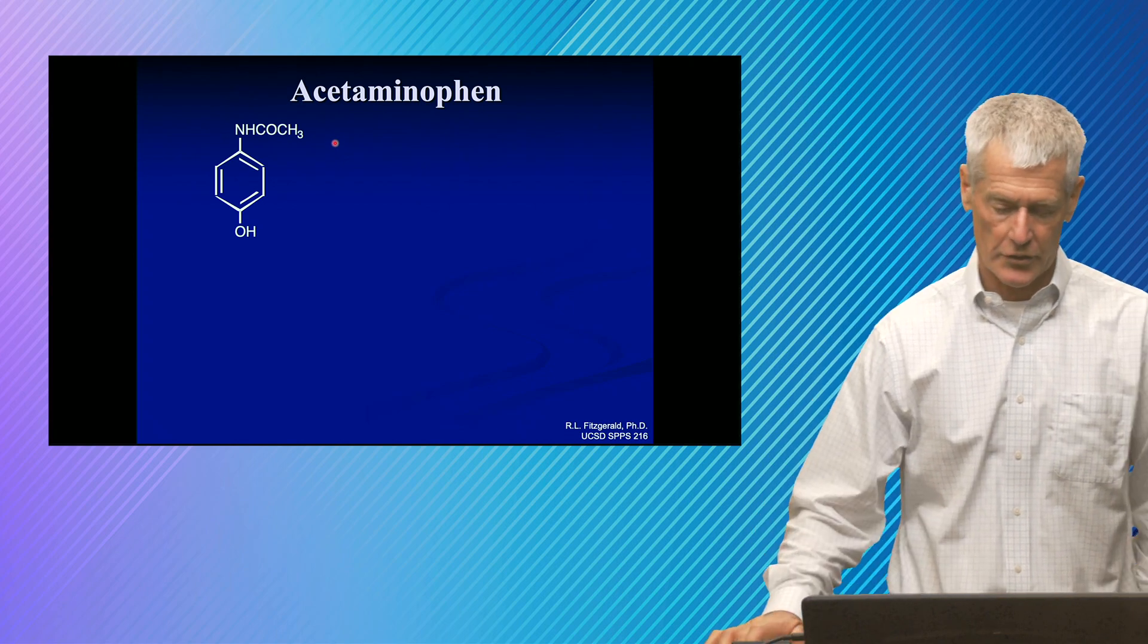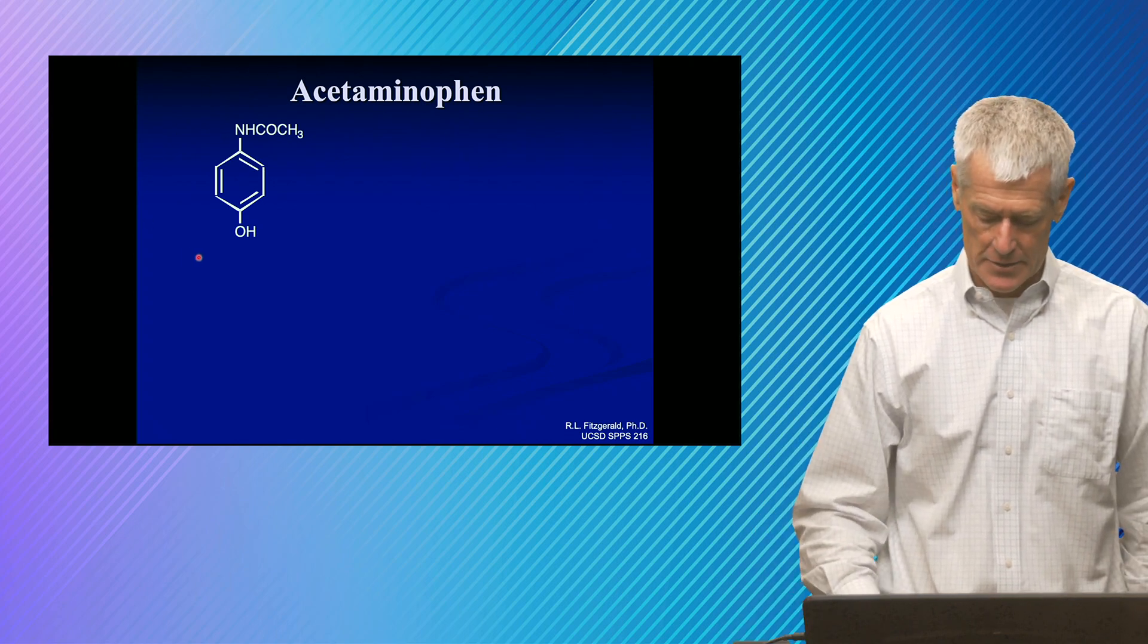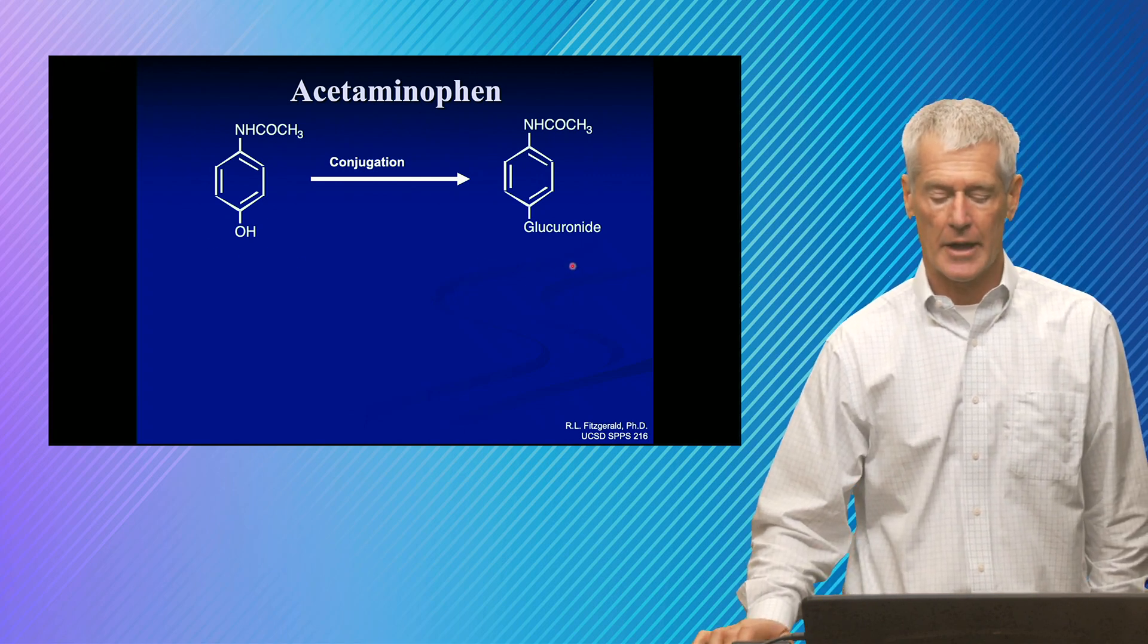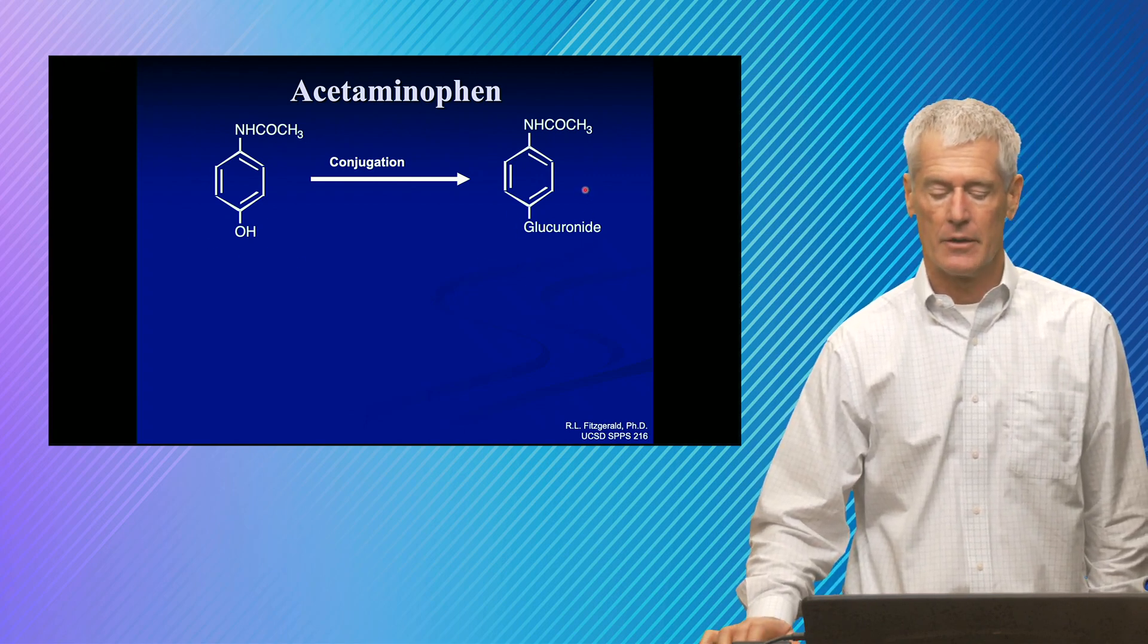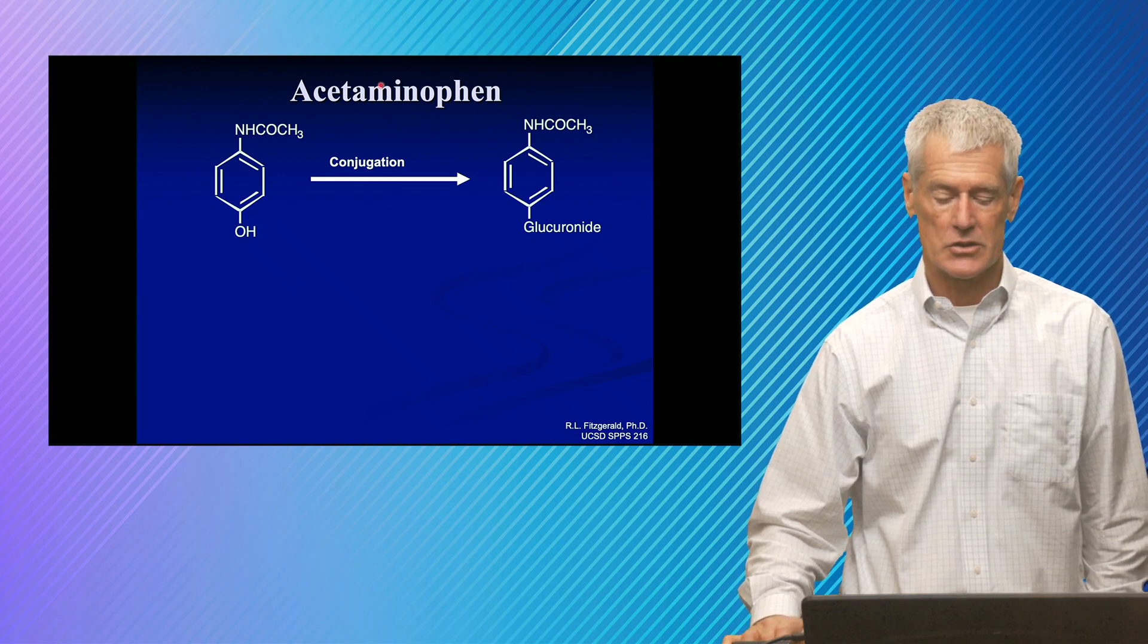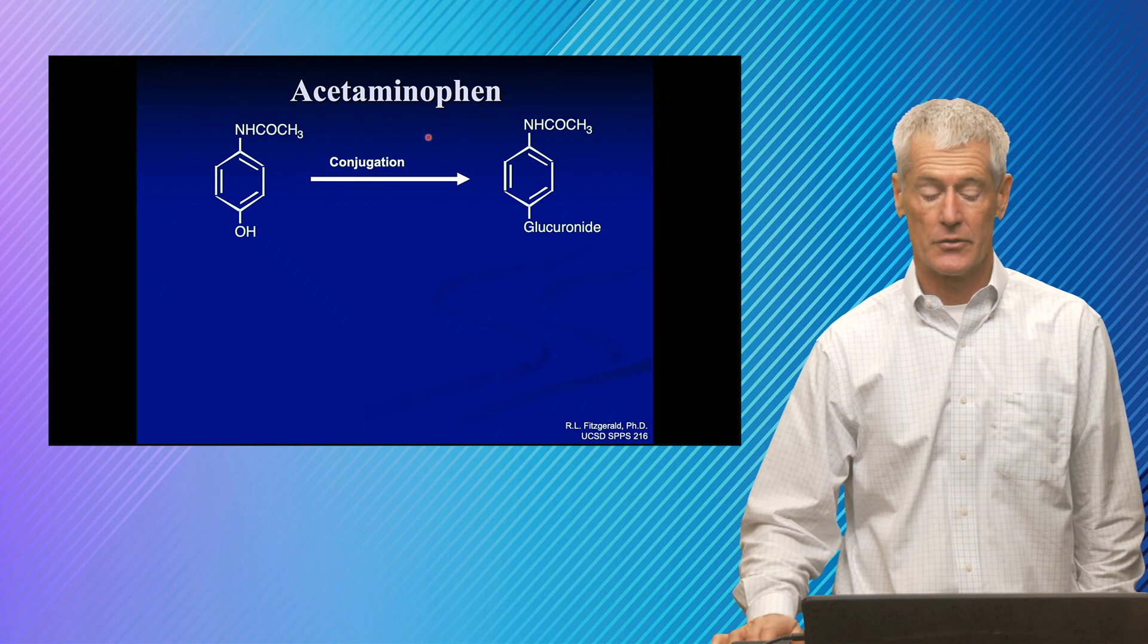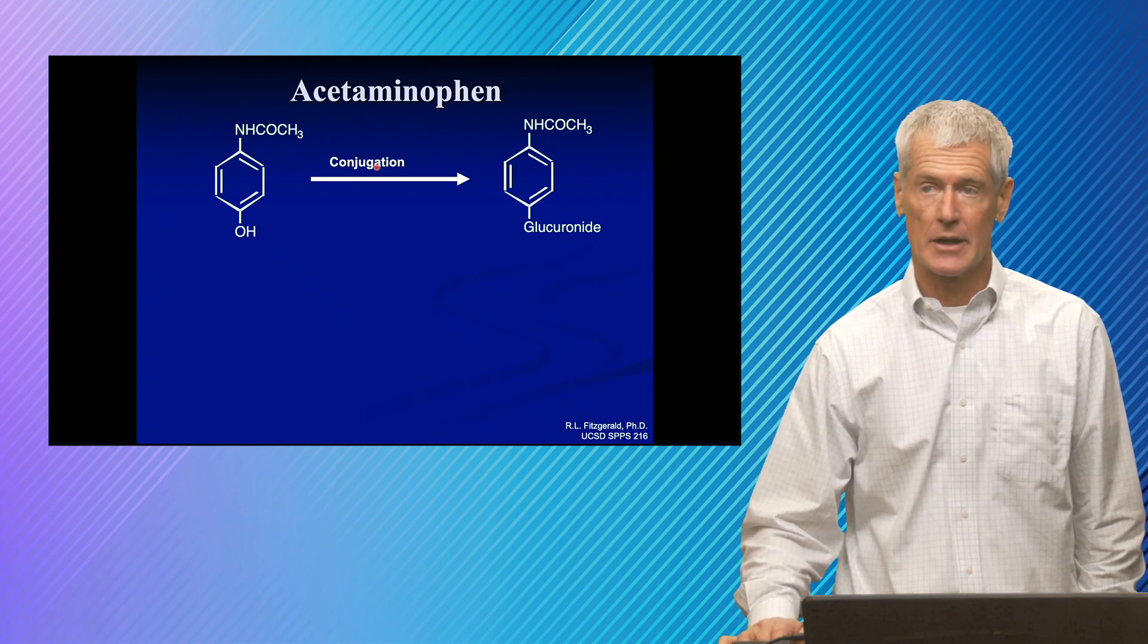So this is what acetaminophen looks like. It gets metabolized through conjugation to form either a glucuronide or a sulfate. And under normal situations, this is the primary pathway and things are fine. What happens is, in an overdose, you saturate these enzymes.